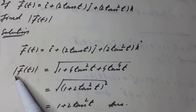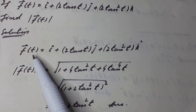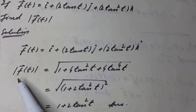Therefore, by finding the magnitude of a vector function of a scalar variable t, we can find a scalar function of the scalar variable t.